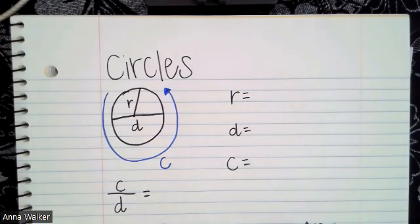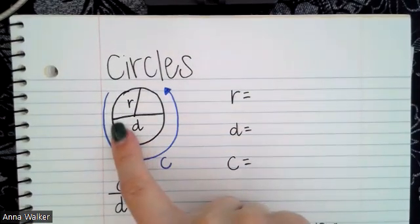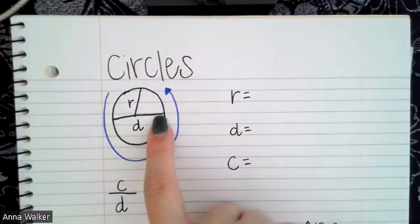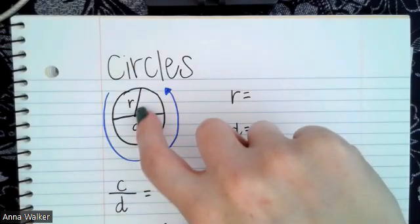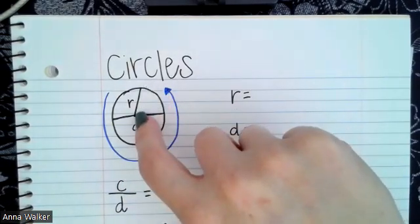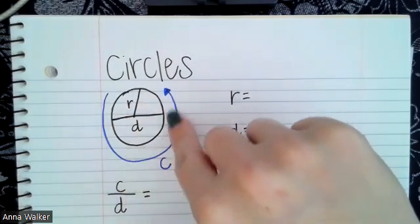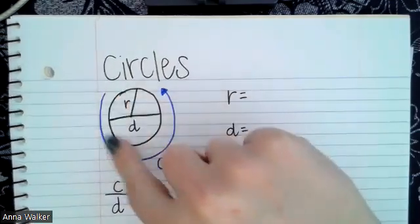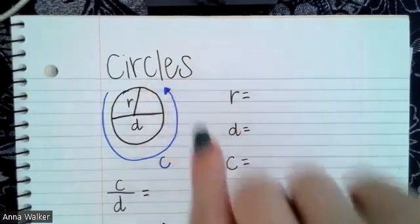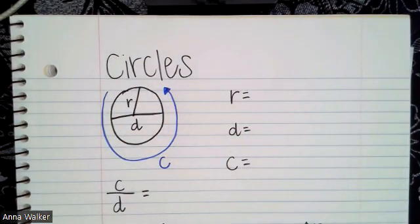I have drawn a circle. I have drawn a line across from end to end of the circle, and then a line halfway from that center line to the edge of the circle, and an arrow indicating the distance around a circle. I've labeled them with different letters: r, d, and c. Let's talk about what all of these letters stand for.